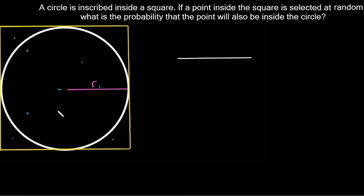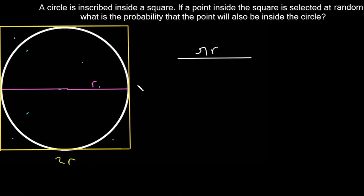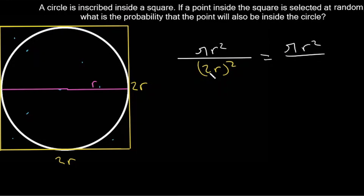So let's say our radius is r. The area of the circle is going to be pi times r squared. Now that we have a radius, even though it's just r, we know that our diameter is going to be 2r. And our diameter is also equal to the side length of the square, so the side length is 2r. So the area of the square, which is all possible outcomes, is going to be 2r squared, which equals 4r squared. So pi r squared divided by 4r squared — we can cancel the r squared — and our answer is pi over 4.